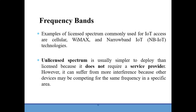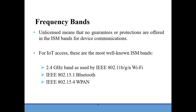For unlicensed bands, protection is not provided in the ISM bands for device communication. Unlicensed spectrums are generally simpler to deploy than licensed spectrum because they do not require a service provider, but they suffer from more interference as other devices compete for the same frequency band in the same area. The most well-known ISM bands for IoT access are the 2.4 GHz band used by IEEE 802.11 BGN Wi-Fi, IEEE 802.15.1 Bluetooth, and IEEE 802.15.4 WPAN. When deploying IoT devices, we should choose licensed or unlicensed bands based on requirements and consider country-specific frequency regulations.